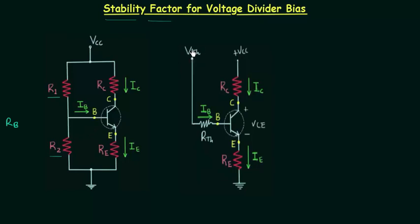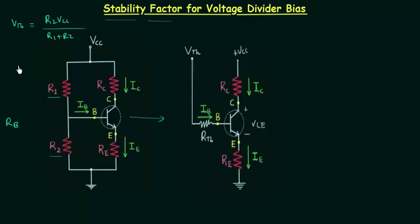We have to find out Vth and Rth to convert this circuit to Thevenin's equivalent circuit. This side is the load and we apply Thevenin's theorem to find Vth and Rth. Vth is the Thevenin's voltage and it is equal to R2·Vcc / (R1 + R2). Rth is the Thevenin's resistance and it is equal to R1 parallel R2, which equals R1·R2 / (R1 + R2).